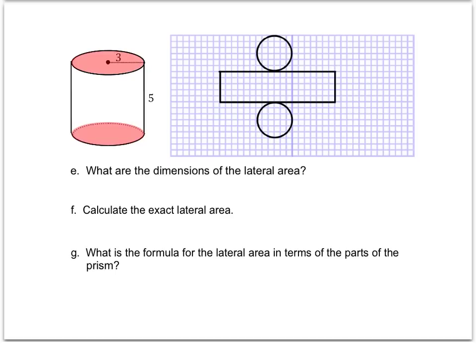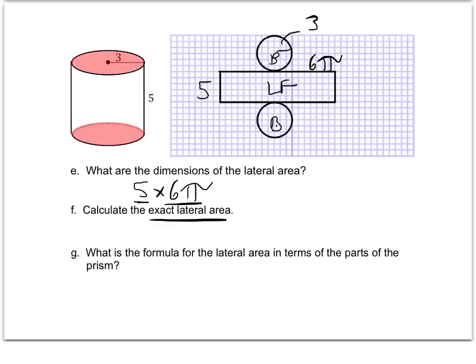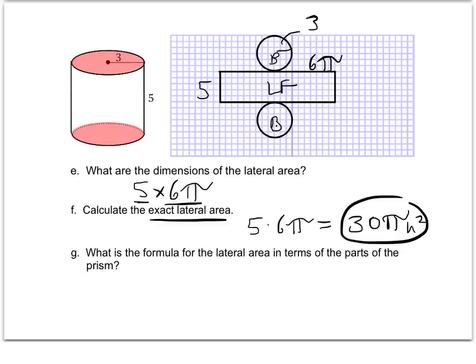Moving on to the next few questions. The dimensions of the lateral area are five by six pi — a length and width of five and 6π. Then we calculate the exact lateral area, and when it says exact, that means leave it in pi form. So five times six pi gives us an exact lateral area of 30π units squared, because it is area.